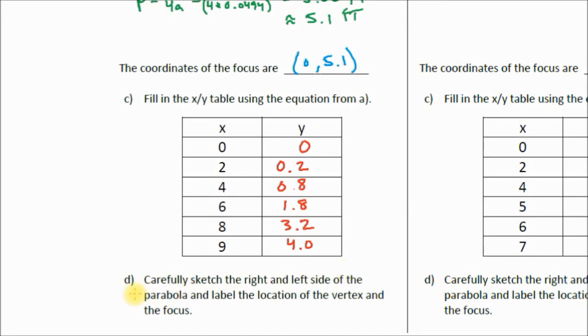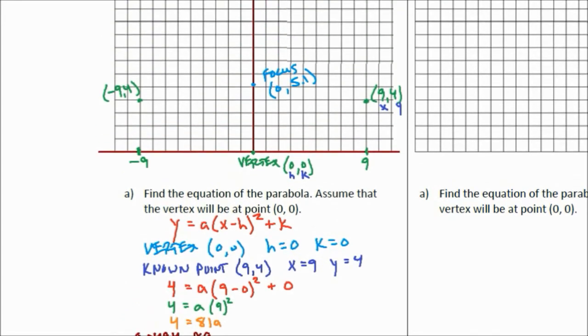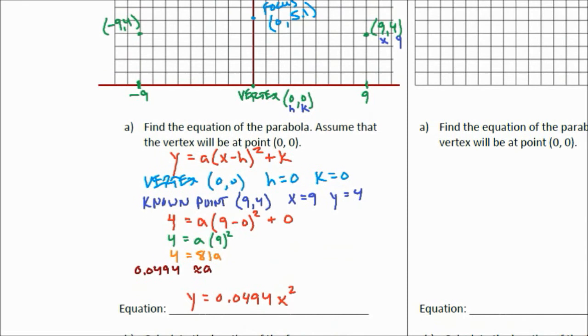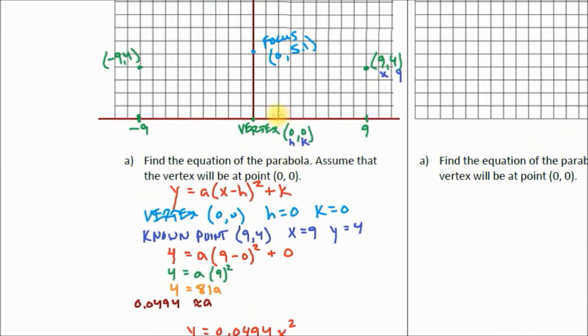Last step. Carefully sketch the right and left side of the parabola and label the location of the vertex and the focus. Well, we already got our vertex and focus. Let's plot our points. So at 2, we're at 0.2. At 4, we're about 0.8. At 6, we're at 1.8. At 8, we're at 3.2. And at 9, we're at 4.0. Let's go ahead now and reflect those on the other side of the y-axis.